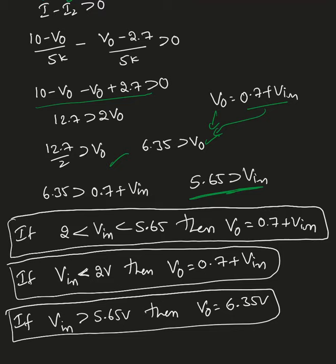So from these three cases: if V_n is greater than 5.65V, the output is clipped at 6.35V; if V_n is less than 2V, V_out = 0.7 plus V_n; and if V_n is between 2V and 5.65V, V_out = 0.7 plus V_n (both diodes closed).